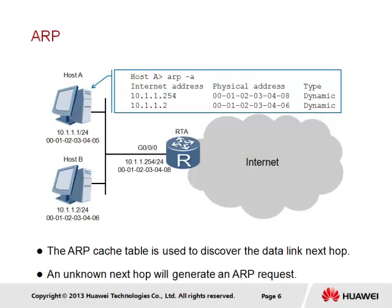If, however, host A did not have an entry in the ARP cache, the ARP process would need to be performed, as was covered in the ARP section of this unit.